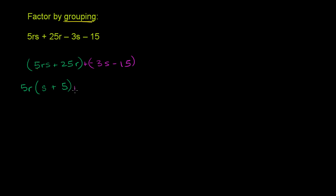Now for the second group: what can we factor out? Both terms are divisible by 3, or even better, they're both divisible by negative 3 — that way we get rid of the negative signs. Only one is divisible by s and only the other by 5. So let's take negative 3 out of both. Factoring negative 3 out of negative 3s leaves s, and factoring negative 3 out of negative 15 leaves positive 5.